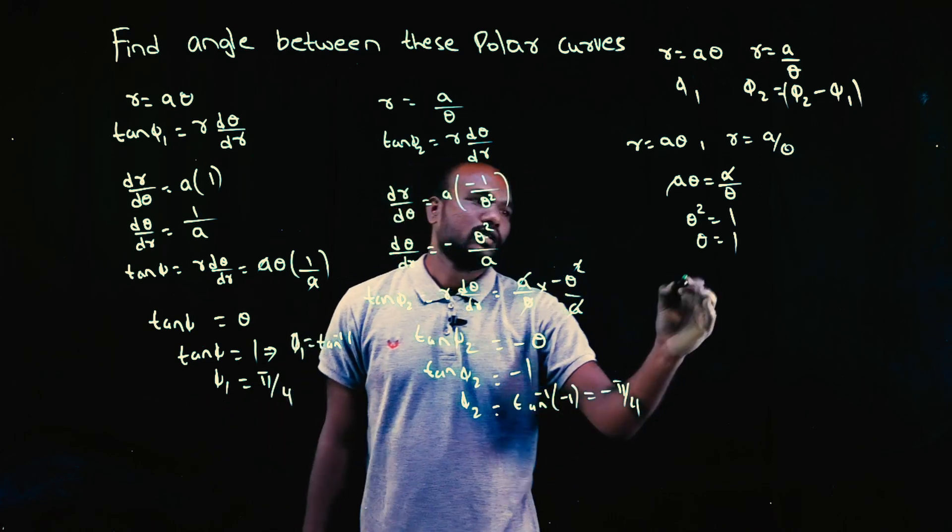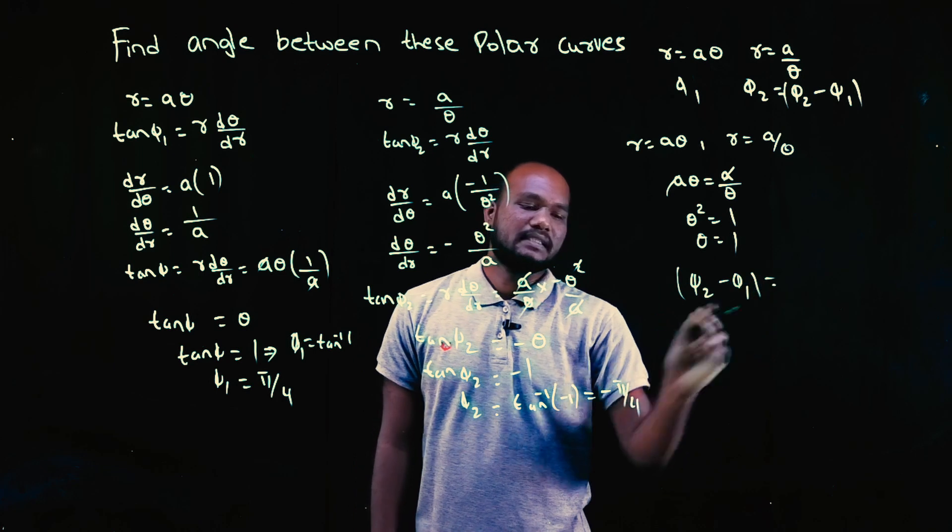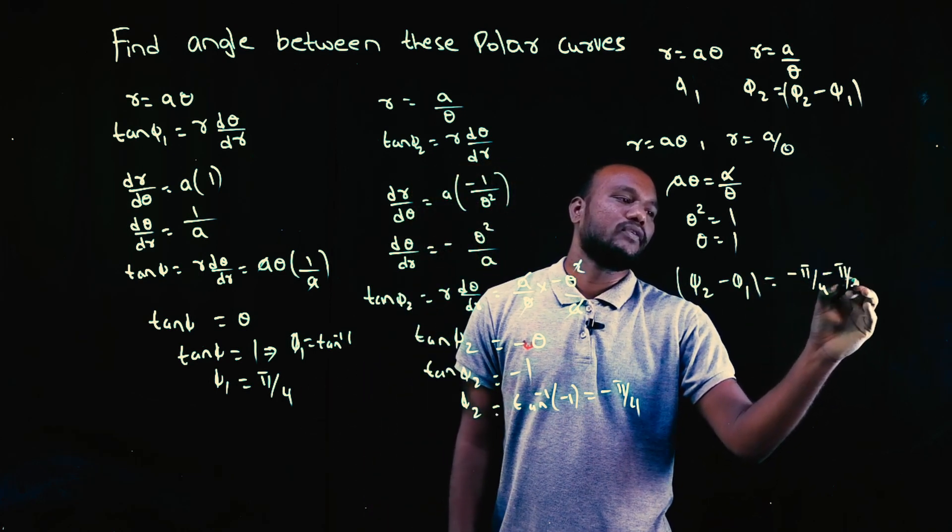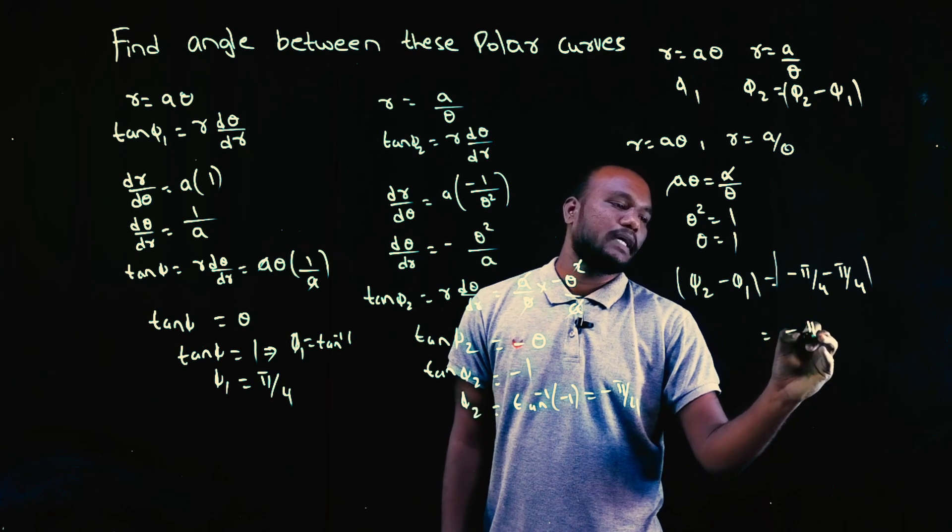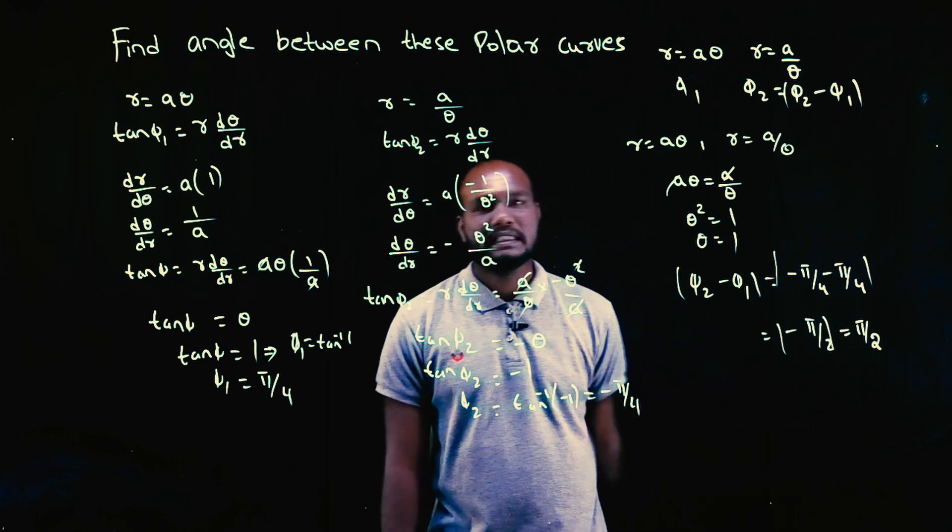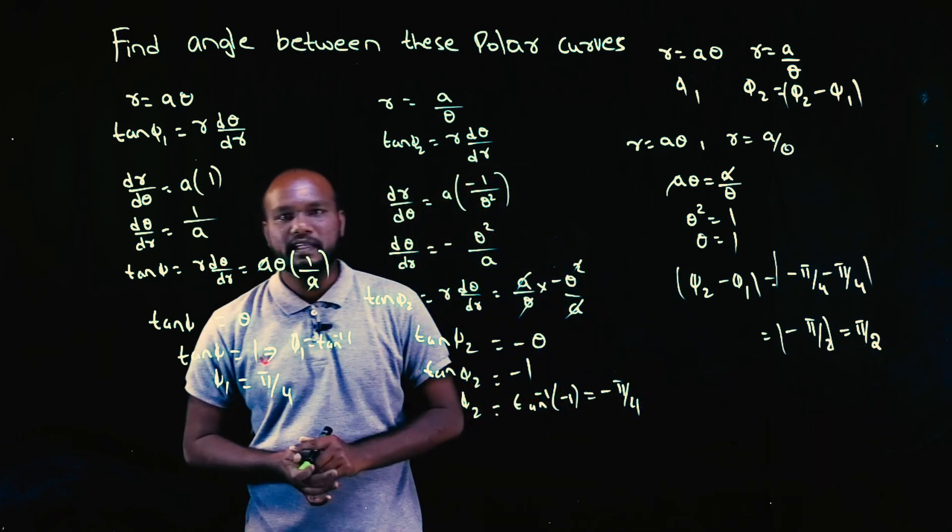So φ₁ and φ₂ we have. φ₂ minus φ₁ is how much? This minus this: -π/4 - π/4 = -π/2. Minus 45° minus 45° is -90°, that is equal to 90°. The angle between these two curves is 90°. That means these two curves are orthogonally intersecting.